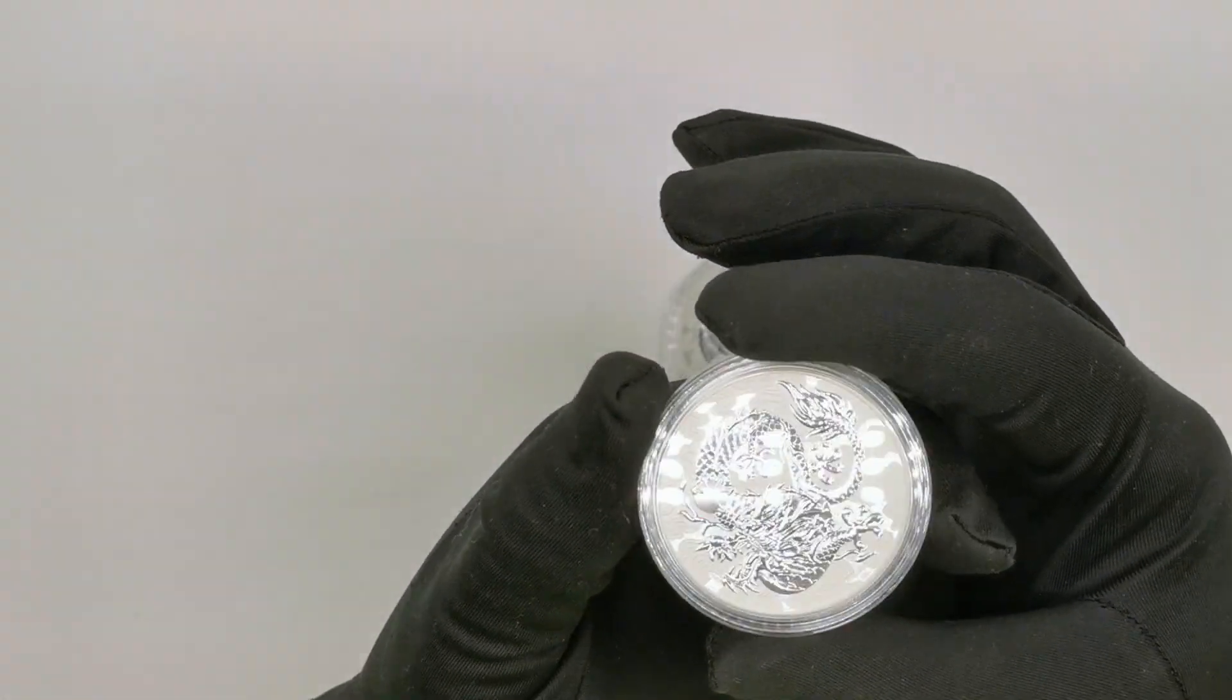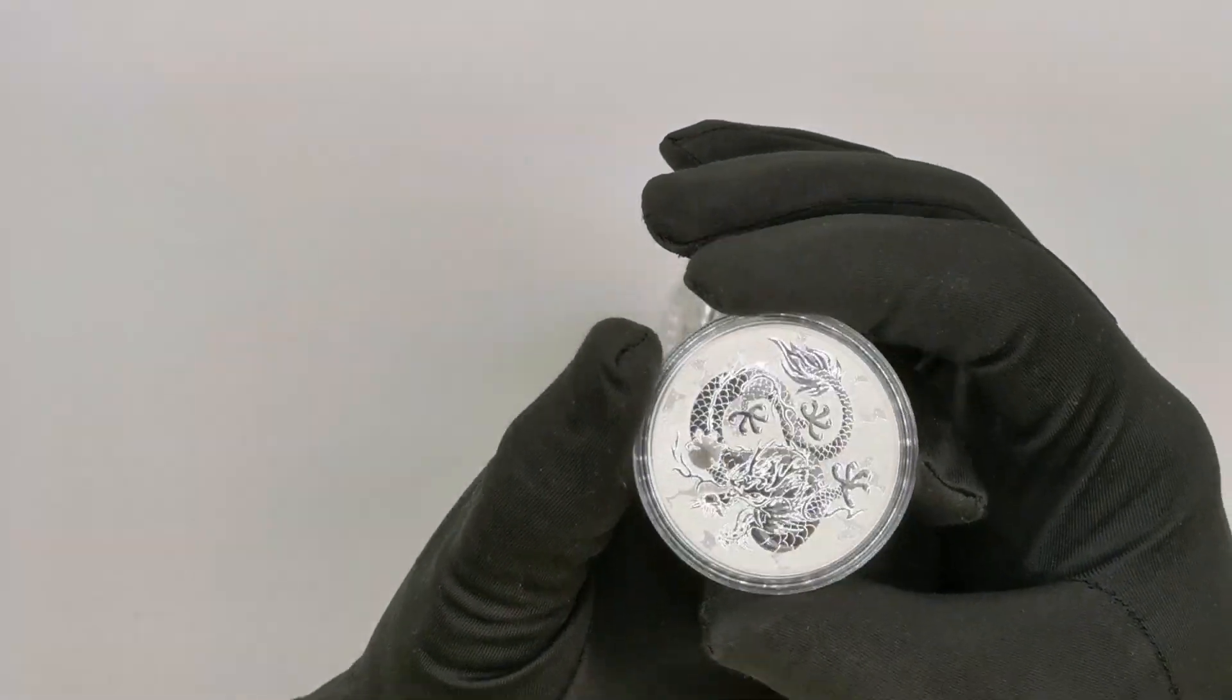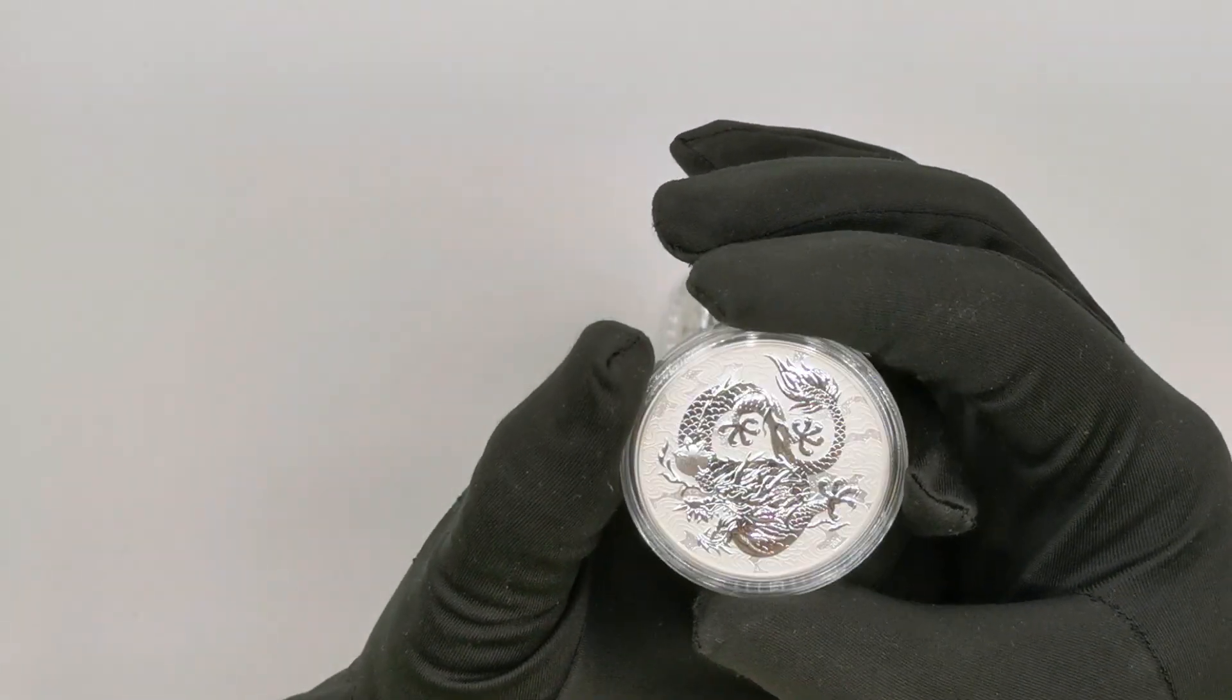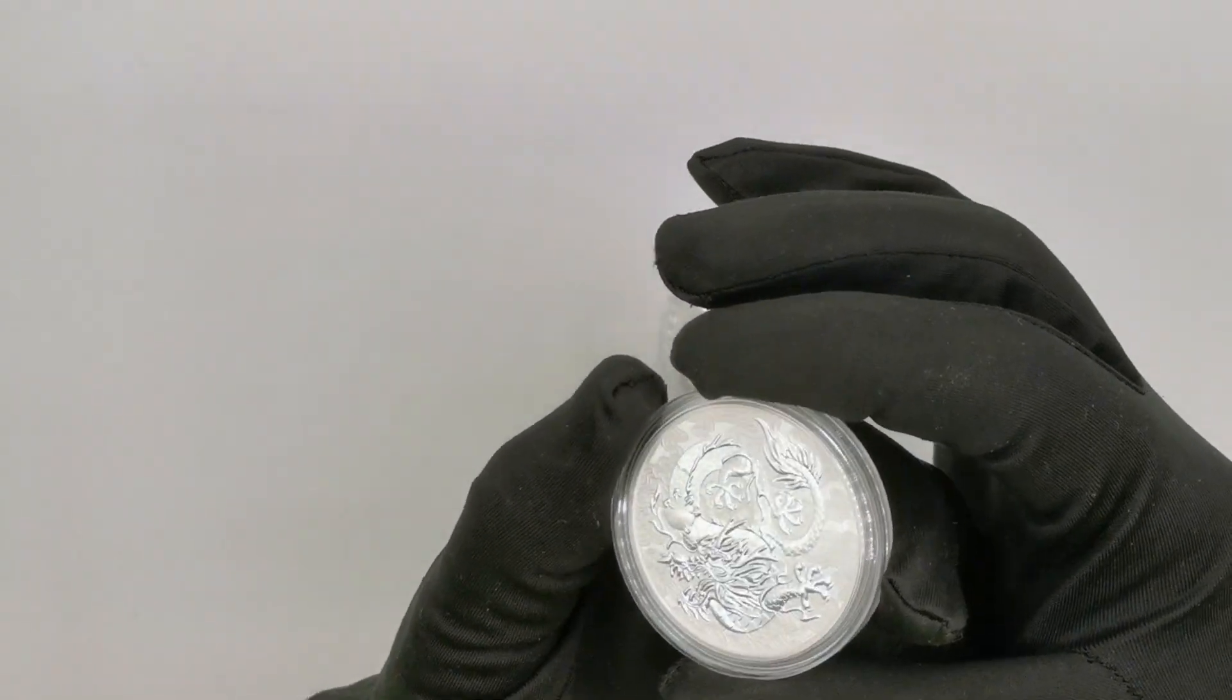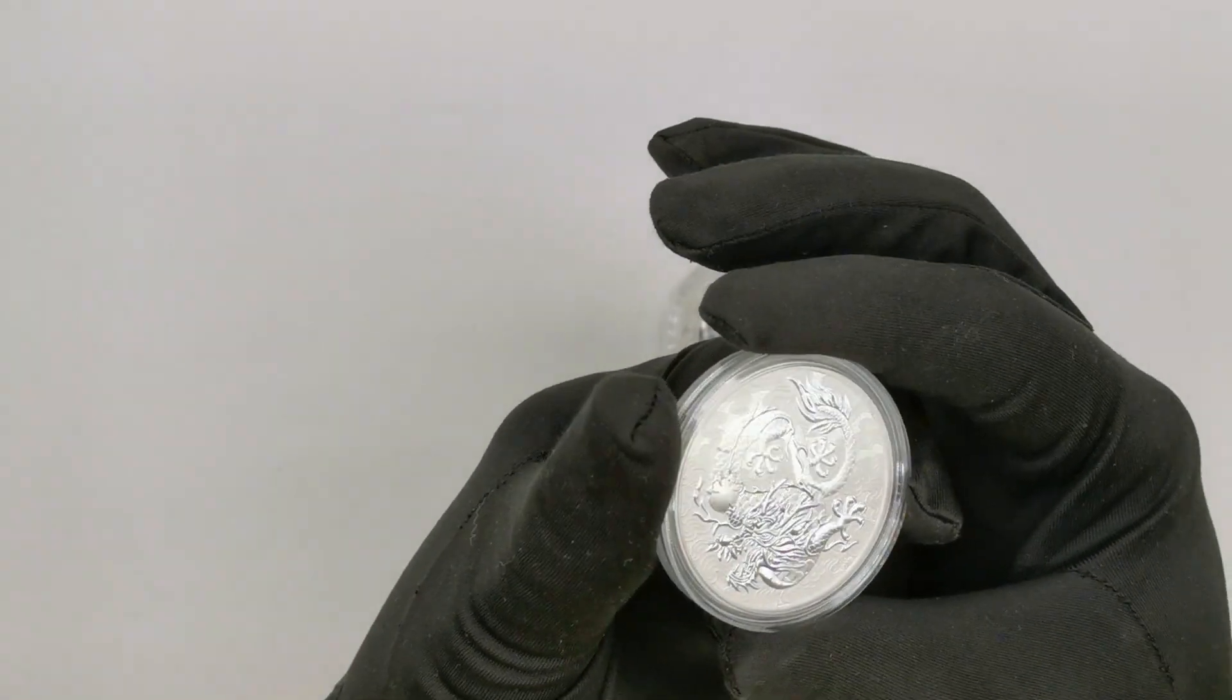So here it is guys, a very quick review of the latest bullion release by the Perth Mint, the 2021 one ounce silver bullion Dragon.